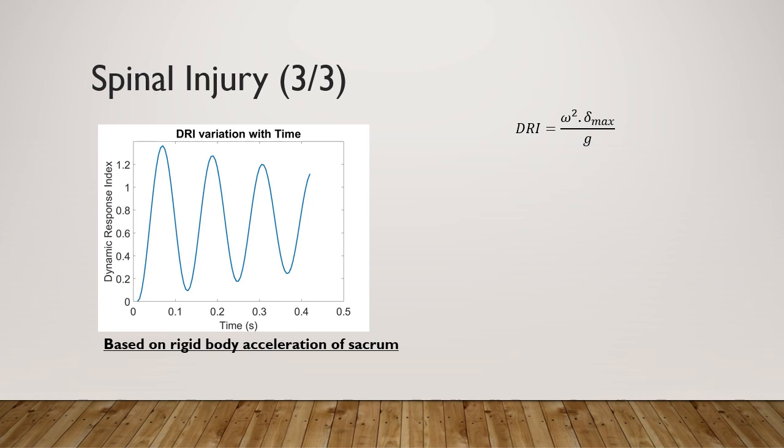After finding out the value of σ_max, we have found DRI. DRI with ω² multiplied by σ_max divided by g. σ_max was found from the differential equation at time, then we have plugged into this equation. We have plotted the result of DRI with respect to time. Thank you.